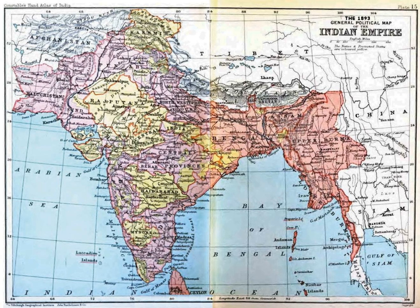Eastern Bengal and Assam was created in 1905 upon the partition of Bengal, together with the former province of Assam. It was re-merged with Bengal in 1912, with the northeastern part re-established as the province of Assam. Bihar and Orissa was separated from Bengal in 1912, and renamed Bihar in 1936 when Orissa became a separate province. Delhi was separated from Punjab in 1912, when it became the capital of British India. Orissa became a separate province in 1936 by carving out certain portions from the Bihar and Orissa Province and the Madras Province. Sindh was separated from Bombay in 1936. Panth Piploda was made a province in 1942 from territories ceded by a native ruler.